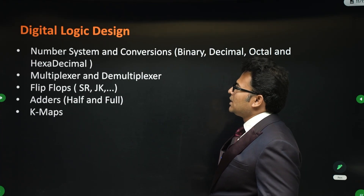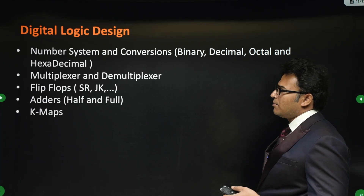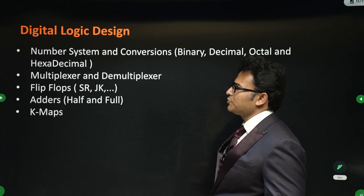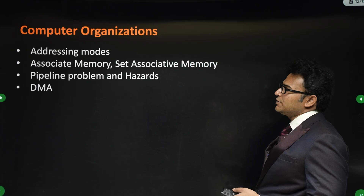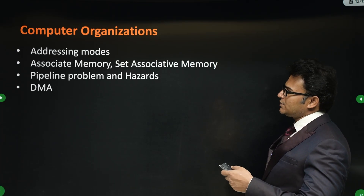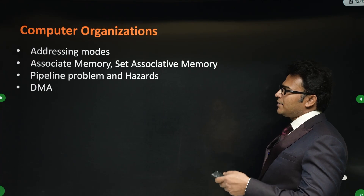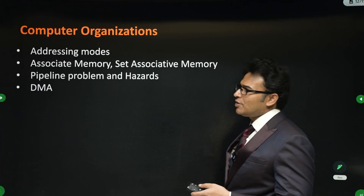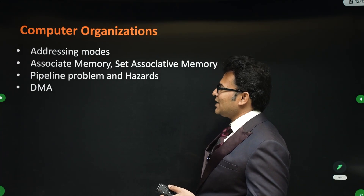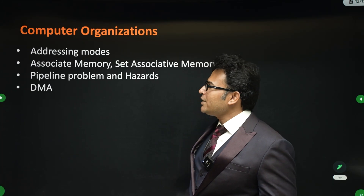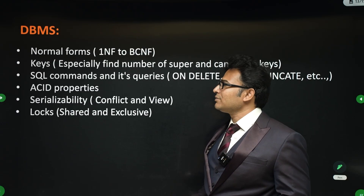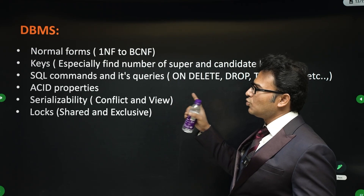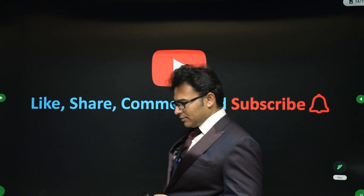For digital logic, focus on number systems and conversions, multiplexers and demultiplexers, flip-flops, adders, and K-maps. For computer organization, addressing modes, associative memory and set-associative memory, pipelining, pipeline hazards, and DMA are important. I have taught all these topics in great depth, so if you've attended my classes you don't need this video. For DBMS, all the listed topics are important — go through them.